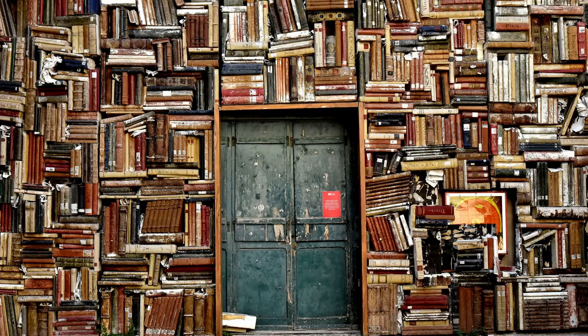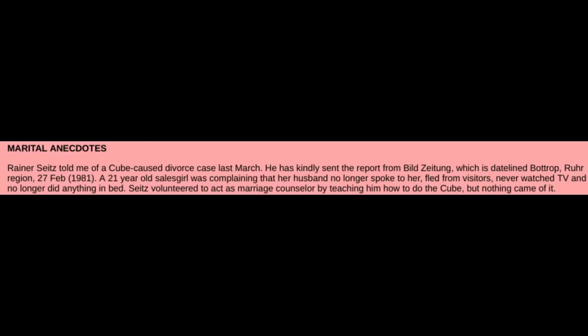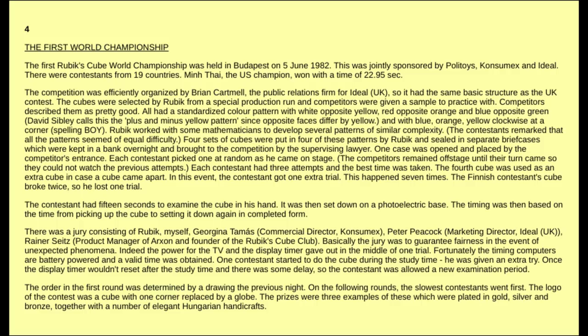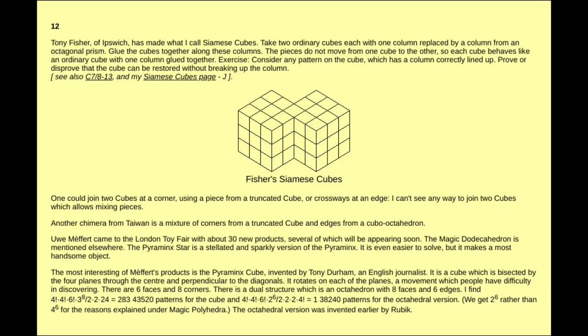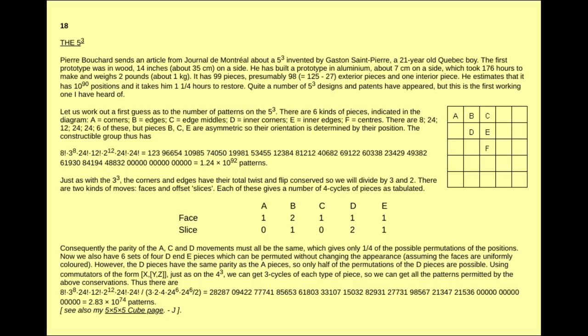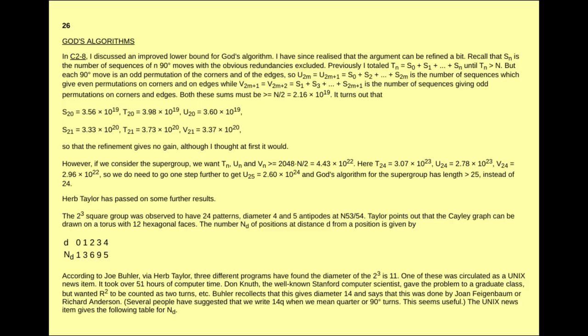The magazine includes far too many things to name here, but some of the most interesting include: one of the first looks at the Pyraminx; some fascinating anecdotes such as a cube-related divorce case; initial findings on the four-dimensional cube; a report on the 1982 World Championship; the first look at Tony Fisher's first ever puzzle mod — possibly the first ever puzzle modification in history; info on the brand new Rubik's Revenge and a prototype 5x5 cube; early discussions on God's algorithm; and various intriguing puzzles long out of production.